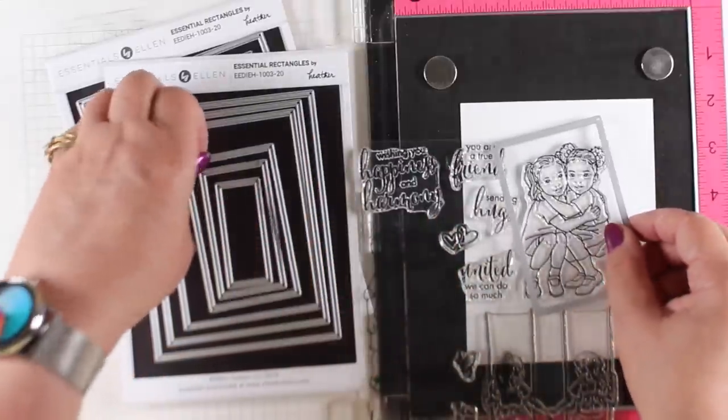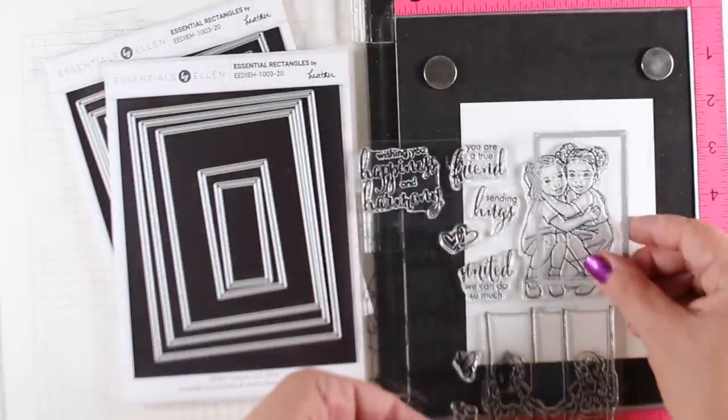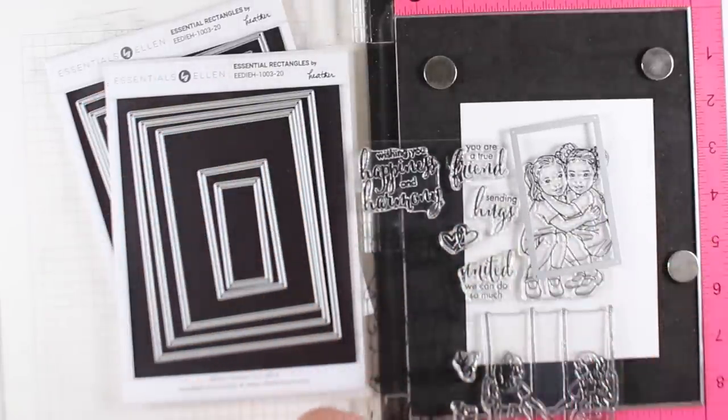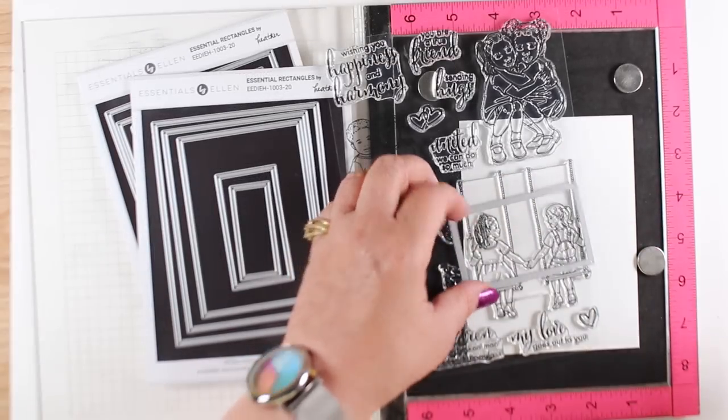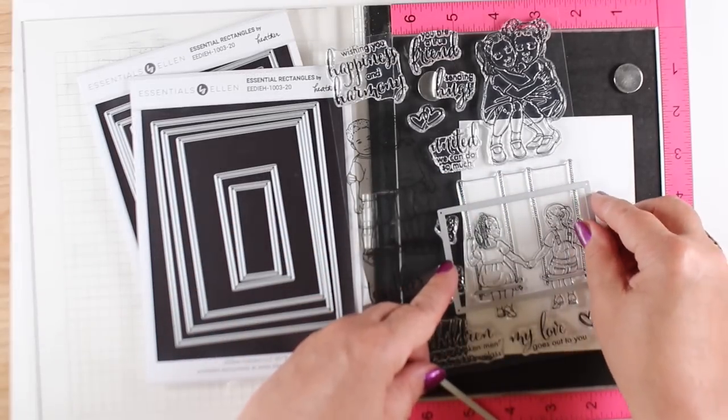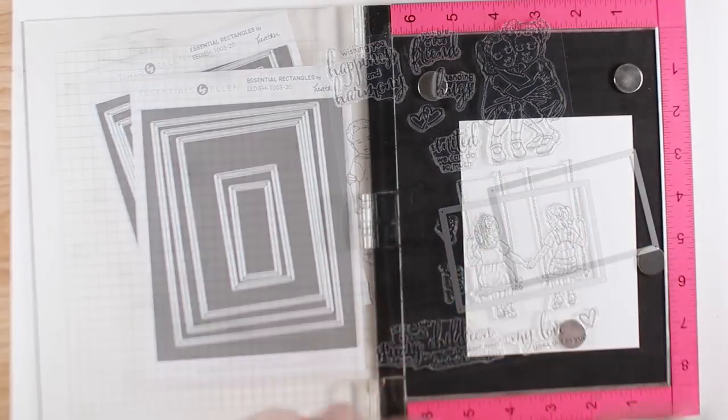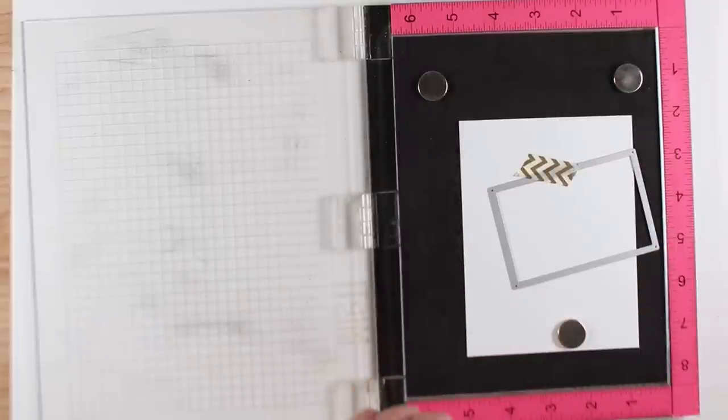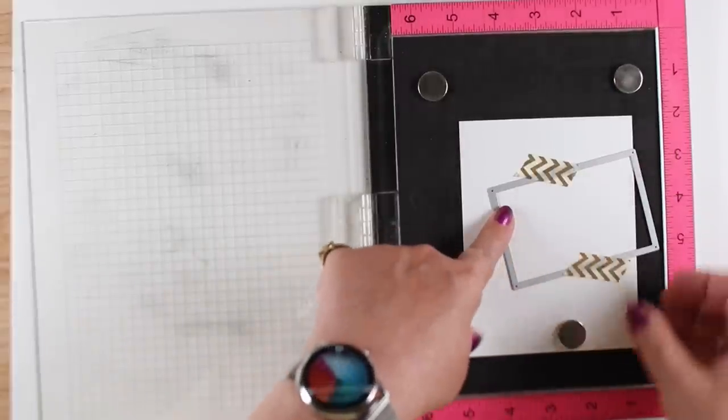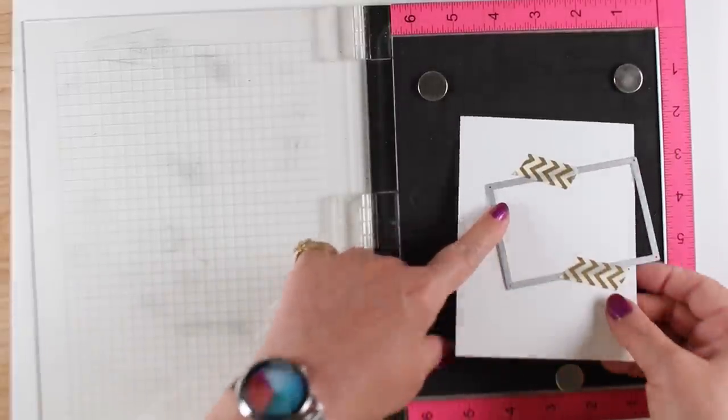I decided I was going to make my own cell phone pictures, so I used the Essentials rectangles from Ellen Hutson to figure out how I wanted to crop each of the pictures and picked out a different die for each one. I decided to tape them down with washi tape at kittywampus angles.